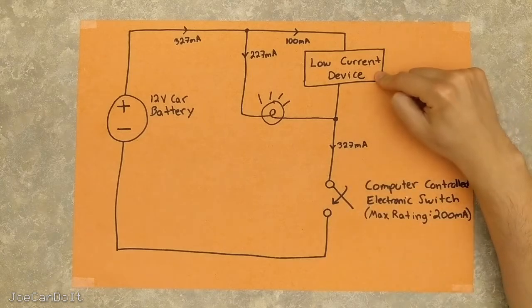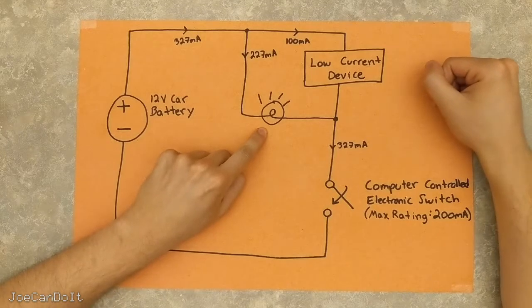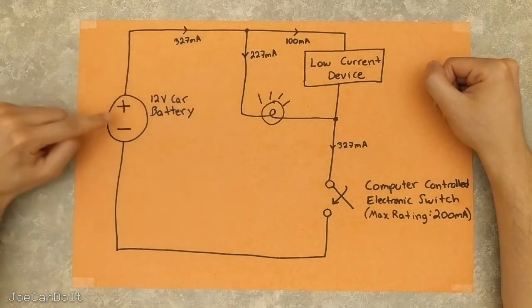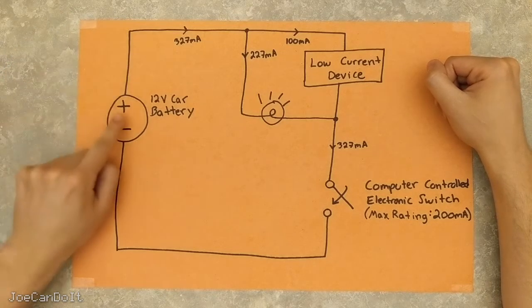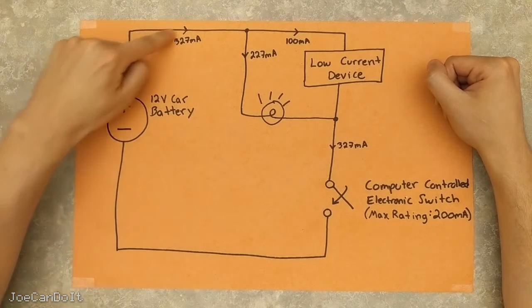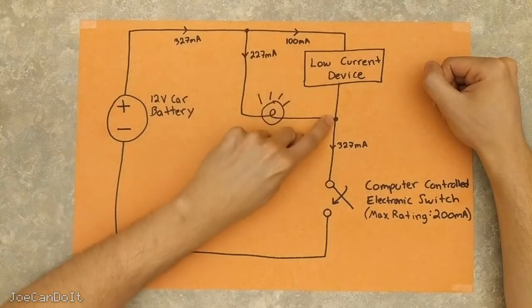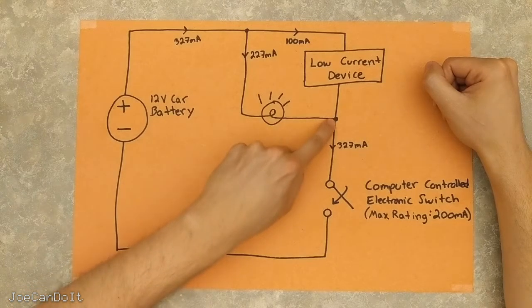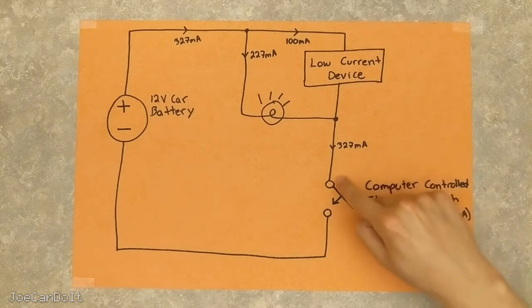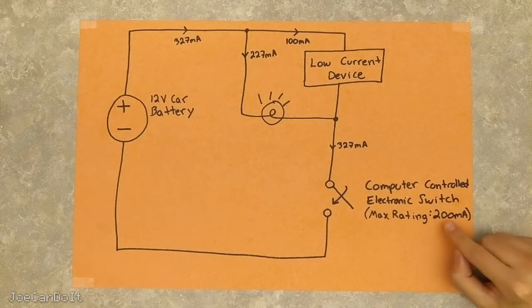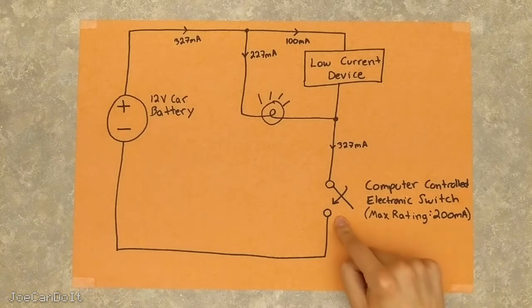Which means the low current device is drawn to 100 milliamps that it needs to operate. The test light lights up and is drawing 227 milliamps, which means the battery would have to need to source 327 milliamps. If we follow the current from the battery, we see it splits off through here, feeds the current to the devices it needs to feed to, and recombines at this point. So we have 327 milliamps over here as well, which goes through this electronic switch. But remember, our switch can only handle 200 milliamps. So chances are, this switch got fried.